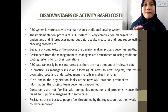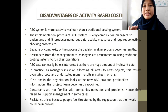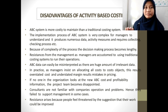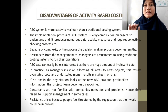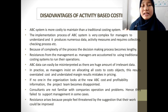Third, there is resistance from management, as managers are accustomed to using the traditional costing system to run their operations. Fourth, ABC system data can be easily misinterpreted and must be used with care when making decisions, as there are huge amounts of irrelevant data in the ABC system information. Fifth, in practice, most managers insist on fully allocating all the costs to products, customers, and other costing objects in an ABC system, including capacity and organization sustaining costs, resulting in overstated costs, understated margins, mistakes in pricing, and other critical decisions.